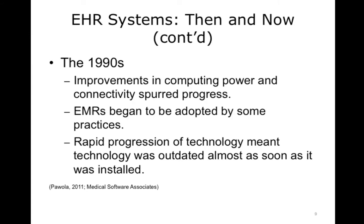In the 1990s, however, computer technology was experiencing significant advances, and processing power became more abundant. Additionally, the IT industry began moving toward large-scale communication networks and distributed computing models, lifting many of the limitations seen in earlier CPR technology. Ambulatory clinics began utilizing electronic medical records, or EMRs, during this time as well. However, despite software improvements, adoption rates were comparatively low. This was partly due to the rapid technological advancements in computer and software which frequently made EMR systems obsolete right out of the box. Additionally, usability issues often made adoption very difficult, particularly for smaller institutions with limited resources.